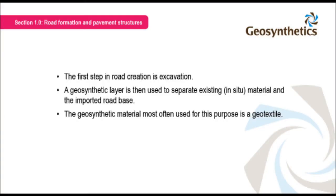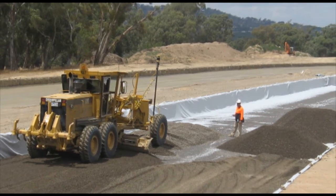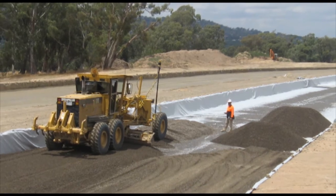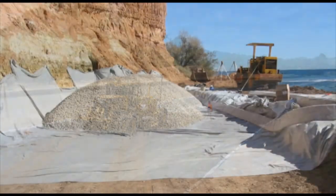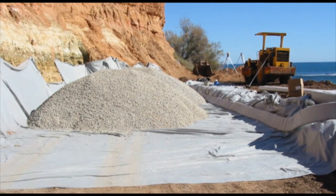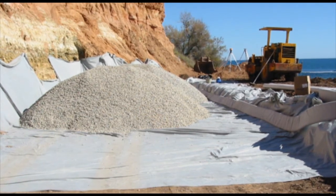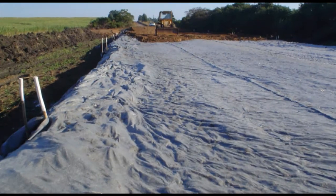The first step in road creation is excavation. A geosynthetic layer is then used to separate existing material and the imported road base. The geosynthetic material most often used for this purpose is a geotextile. A non-woven geotextile is generally rolled out at the bottom of a road excavation. Here we see aggregate being placed on top of a non-woven geotextile which is lining the road excavation. The aggregate provides stability as well as drainage. Highways with multiple lanes are very wide structures, and sometimes adjacent rolls of geotextiles must be used. If so, it is important that they overlap, and road authorities generally specify the required overlap.